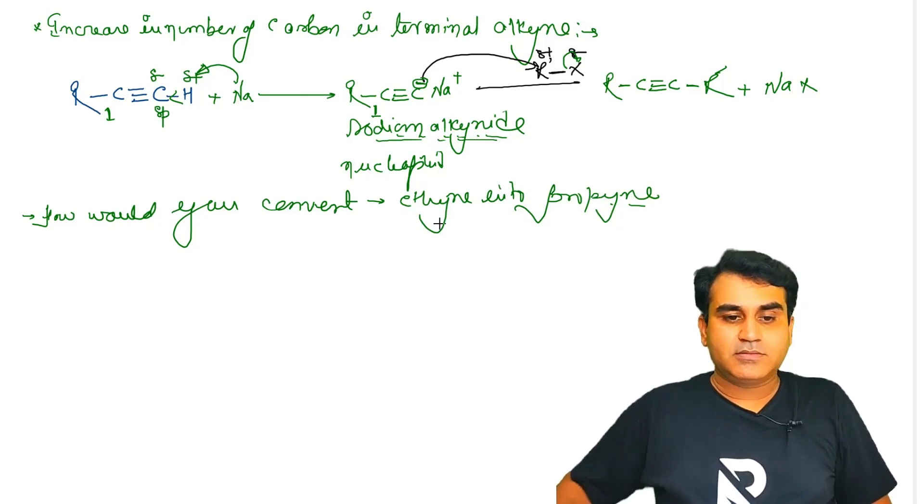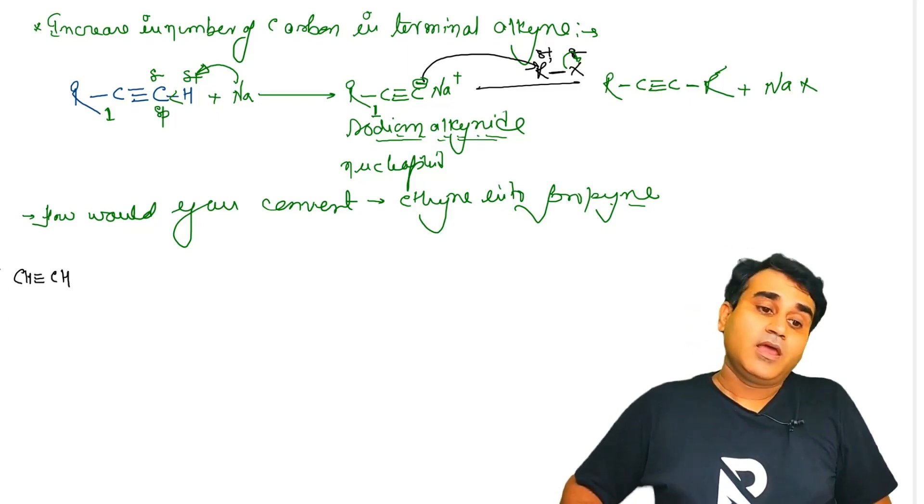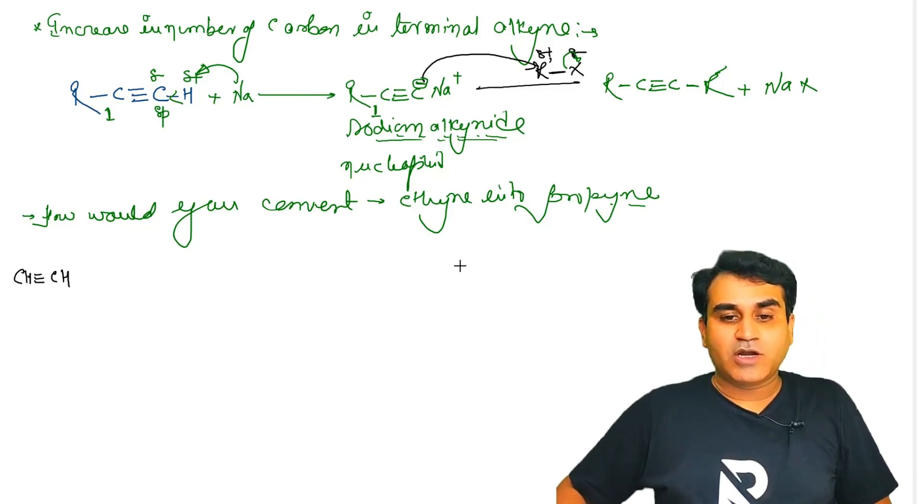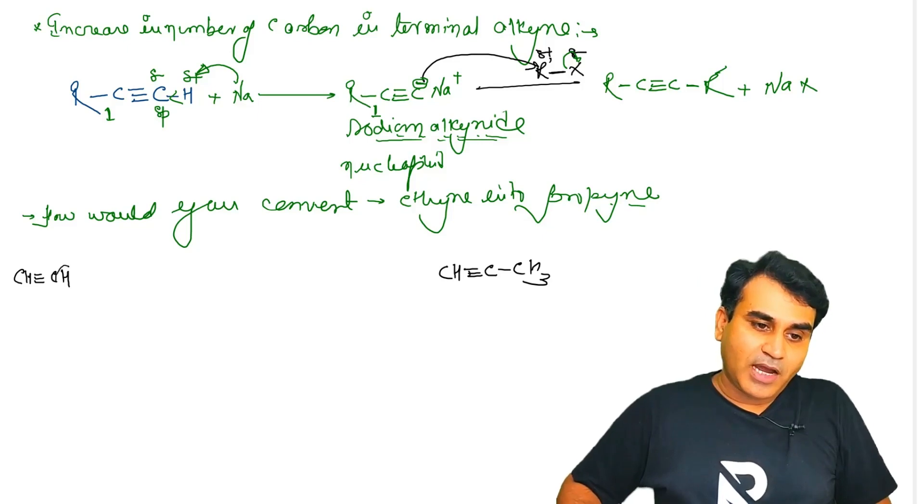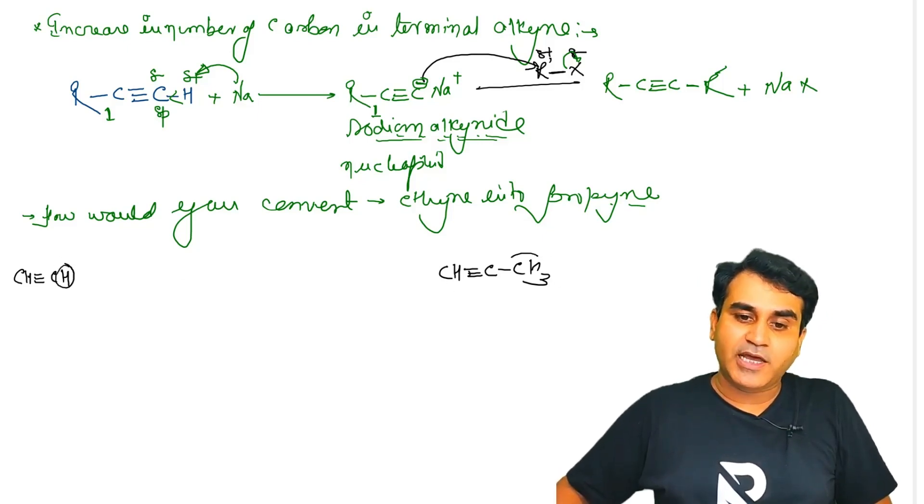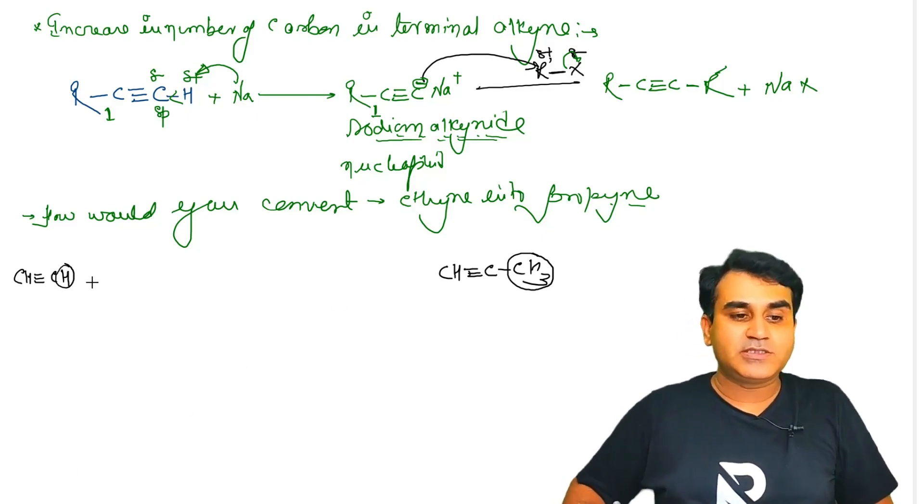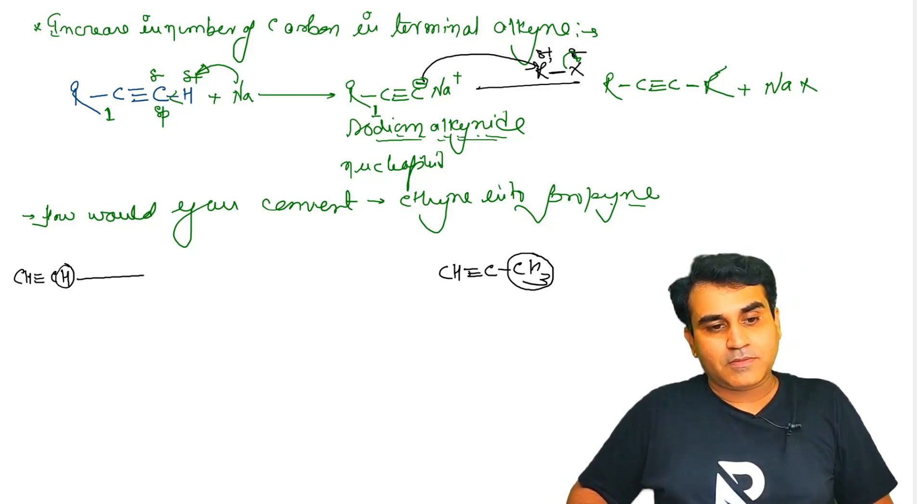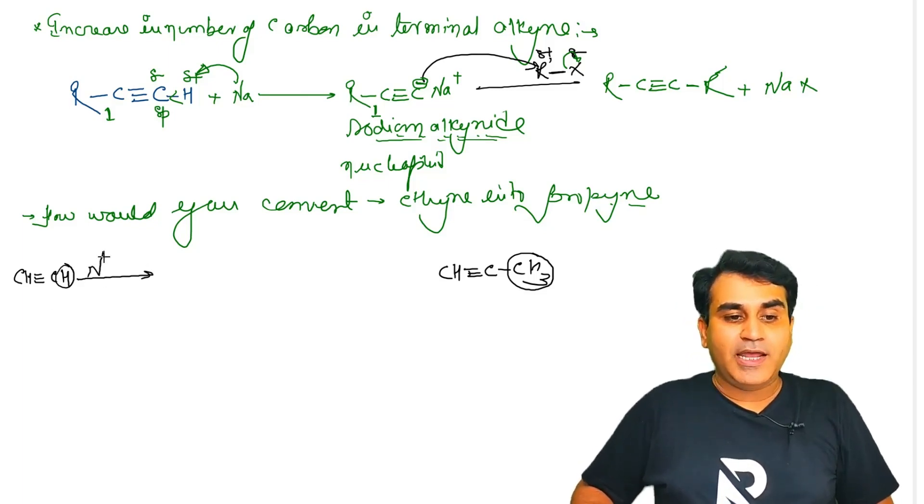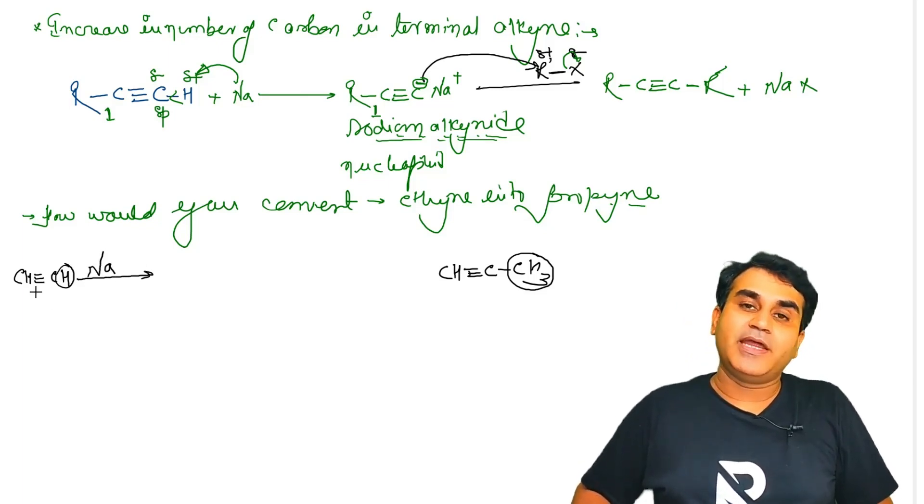In this case, hamare paas hai ethyne - CH≡CH. Humein isko convert karna hai into propyne - CH₃-C≡CH. To yahan pe humein hydrogen replace karke ek naya alkyl group attach karna hai. What we'll do is